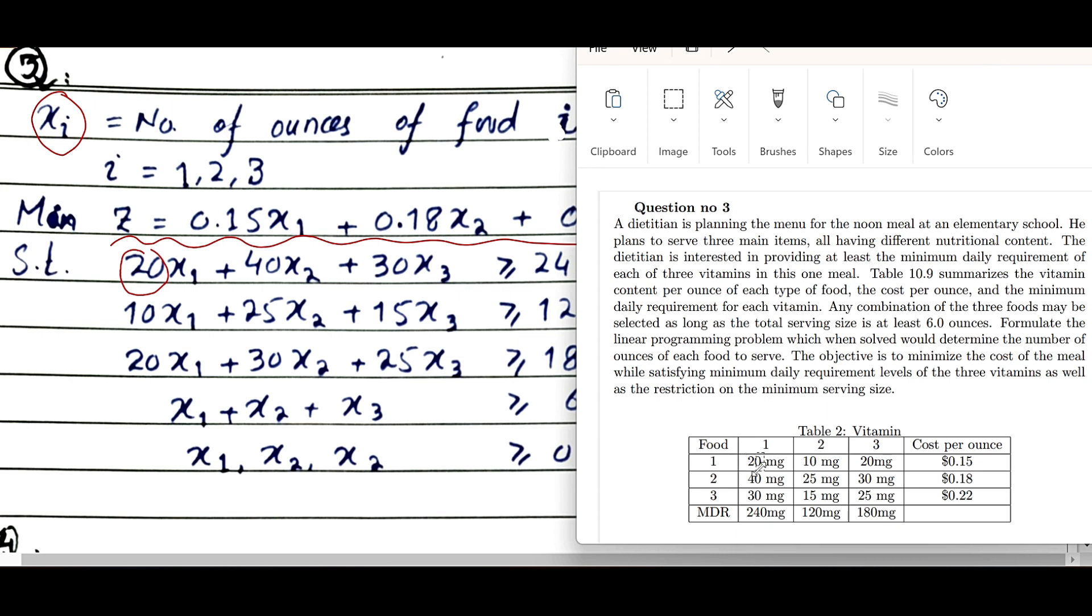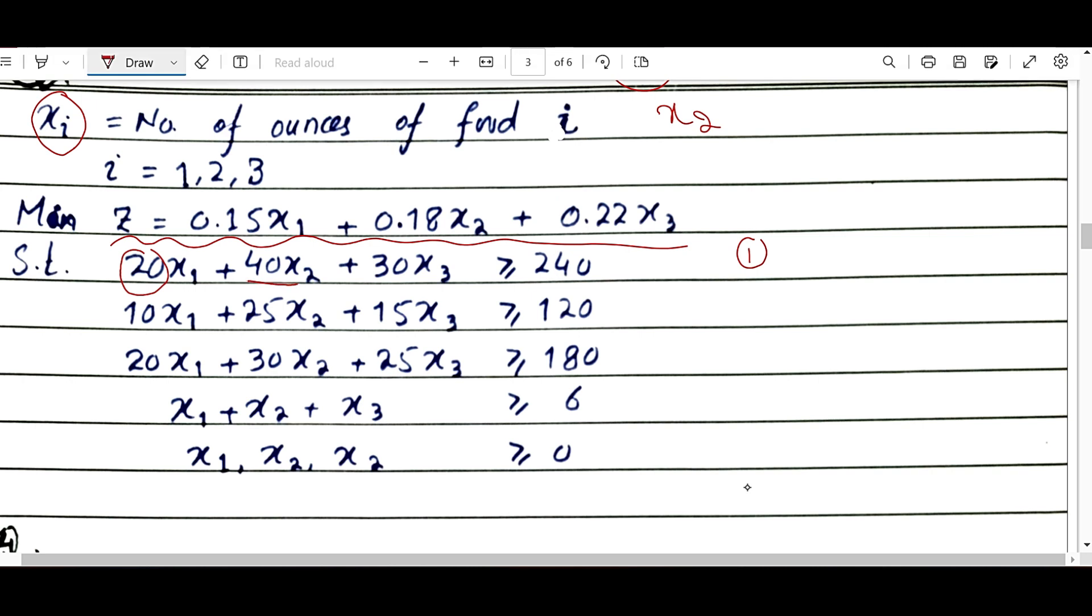So x2 has 40 mg. In x3, the third food contains how much? 30 mg. So combining all three, how much should there be? What is the minimum daily requirement? It is 240.